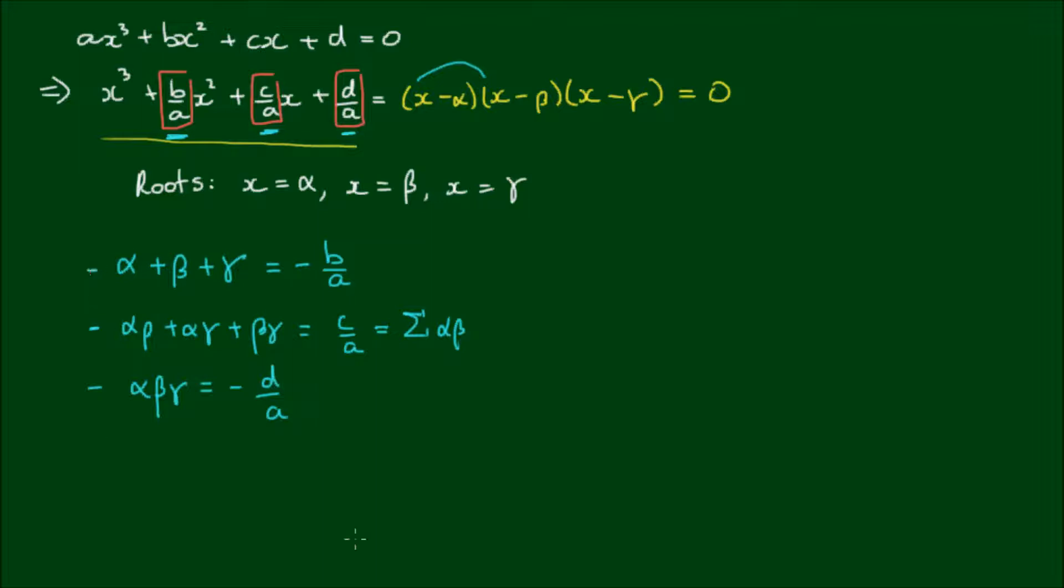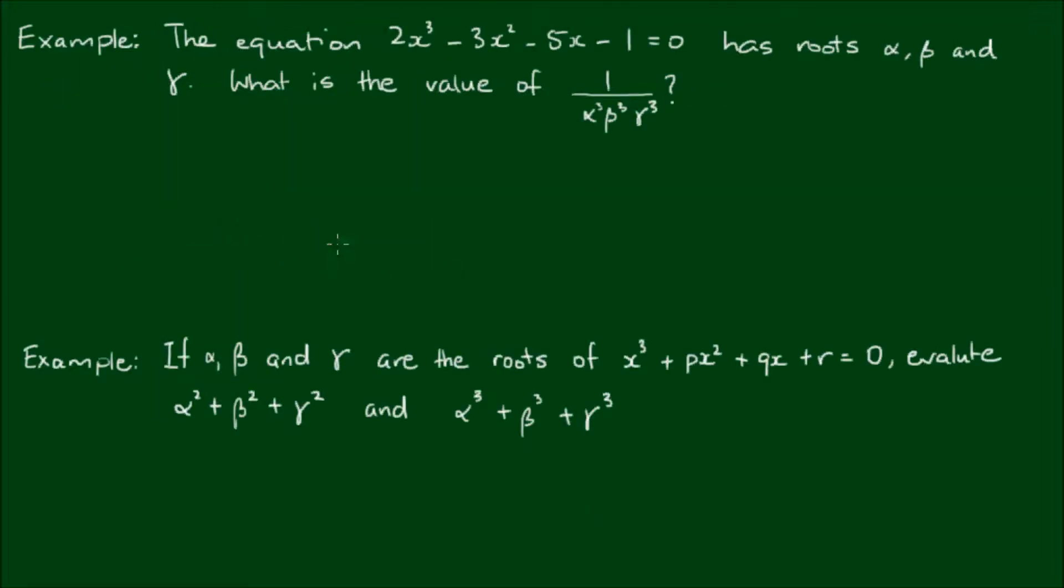Let's do some examples. Okay, so example one. The equation 2x³-3x²-5x-1=0 has roots α, β and γ. What is the value of 1 over α³β³γ³?